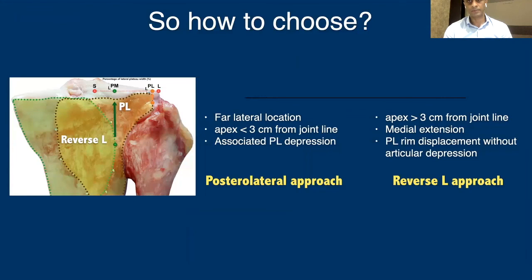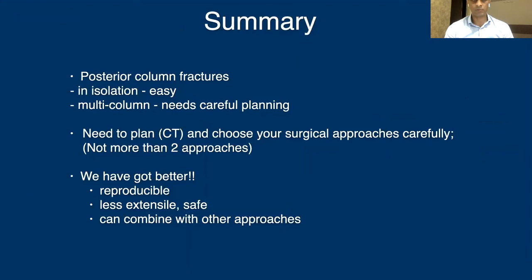To summarize how to choose your surgical approach for a posterolateral fragment: if the fracture is located far laterally with an apex within three centimeters of the joint line and an associated posterolateral depression, the posterolateral approach is preferred over the reverse L. For other fracture patterns, the reverse L approach is indicated. In summary, posterior column fractures in isolation are manageable; multi-column fractures require careful CT-based planning so that you don't need more than two approaches. We have become better at dealing with these fractures, with reproducible and less extensile approaches that can be combined safely without major problems. Thank you.